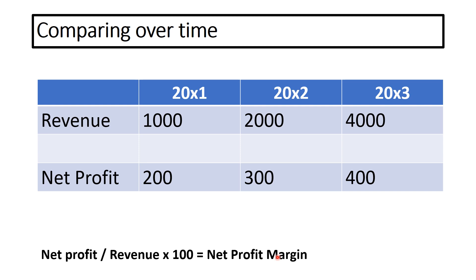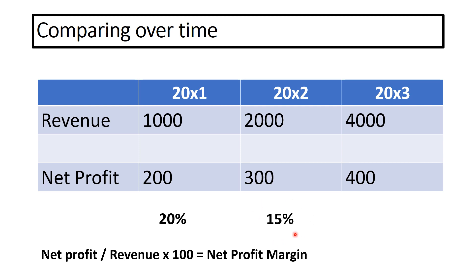Pause the video, calculate the answers, and then we'll see what they come up with when you're ready. For 20x1, you take 200, divide it by 1,000, times it by 100 — the answer is 20%, or 20p in the pound. For 20x2, we've got 300 divided by 2,000, times by 100 — we've got 15%. So even though revenue has doubled and net profit has gone up 50%, we have a falling net profit margin. This is not good for a business — this would ring alarm bells.